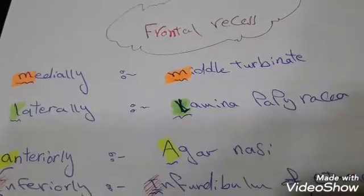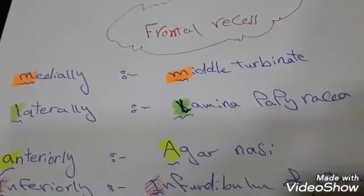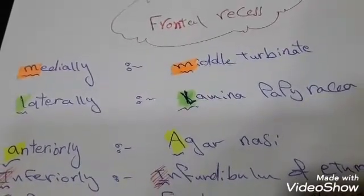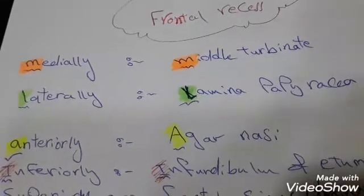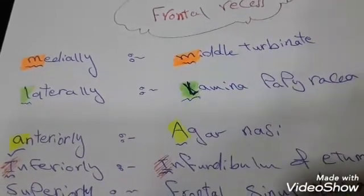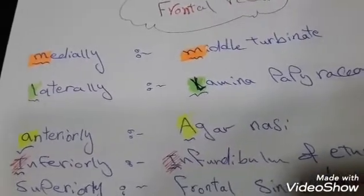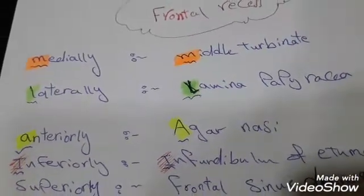M - medially - middle turbinate, L - laterally - lamina papyracea, A - anteriorly - agar nasi, I - inferiorly - infundibulum of ethmoid bone.